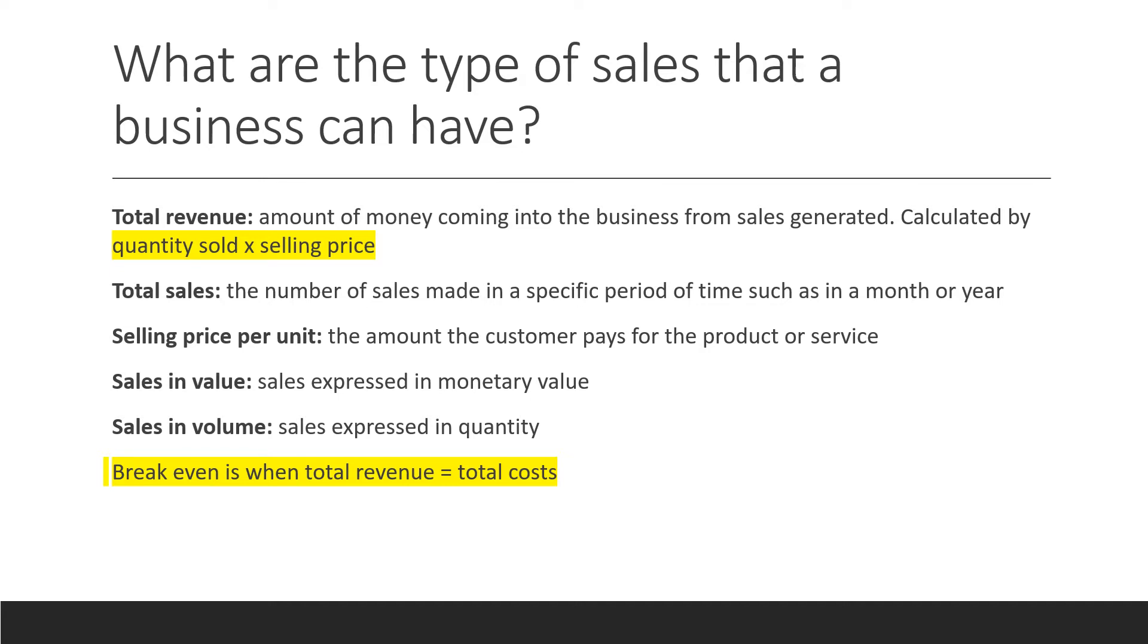What are the types of sales that a business can have? There's total revenue. That's the amount of money that is coming into the business from sales generated, and that is calculated by quantity sold times by the selling price.